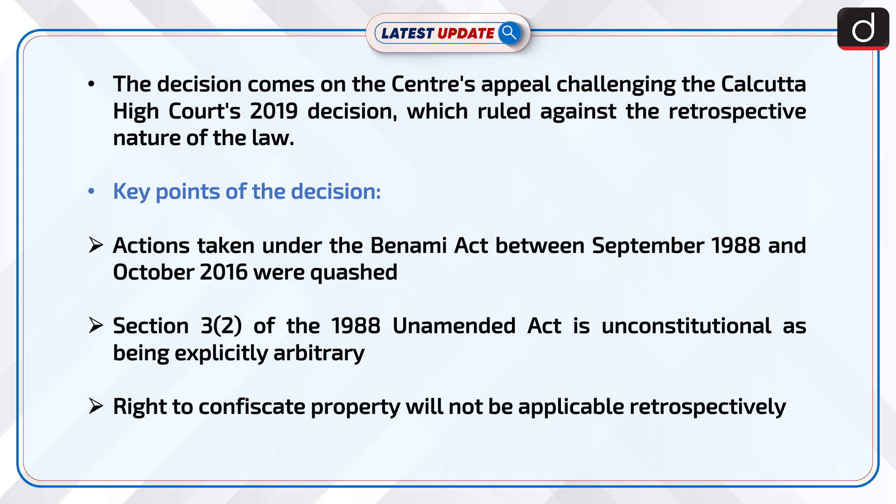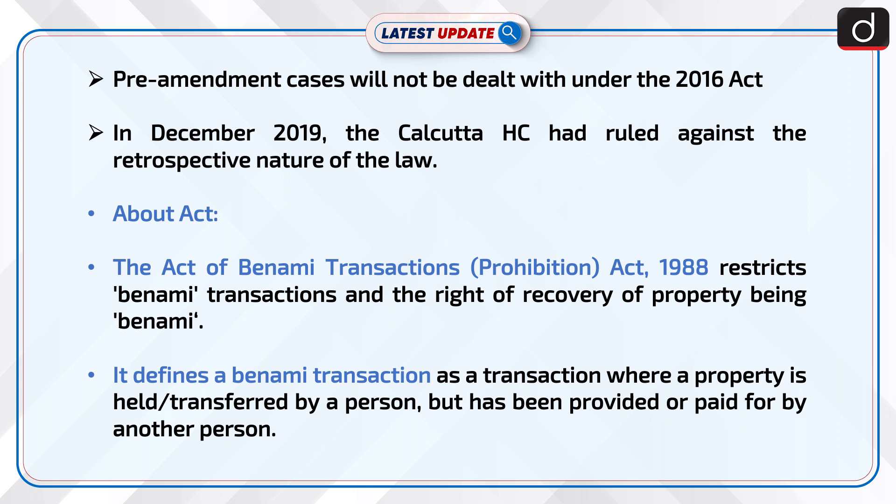Key points of the decision are: actions taken under the Benami Act between September 1988 and October 2016 were quashed. Section 3.2 of the 1988 unamended Act is unconstitutional as being explicitly arbitrary. Right to confiscate property will not be applicable retrospectively. Pre-amendment cases will not be dealt with under the 2016 Act. In December 2019, the Calcutta High Court had ruled against the retrospective nature of the law.